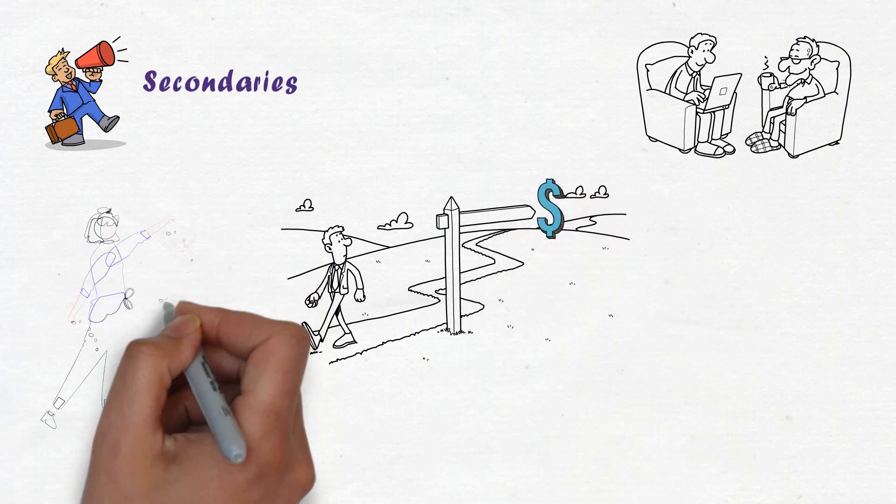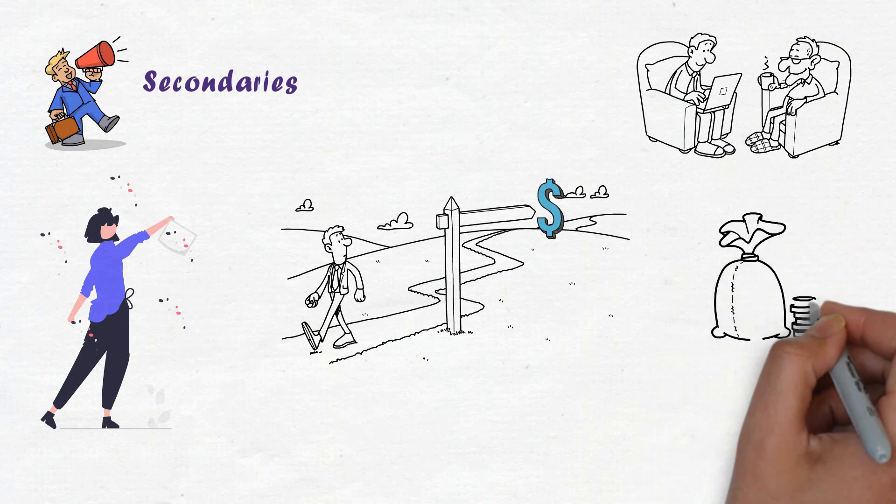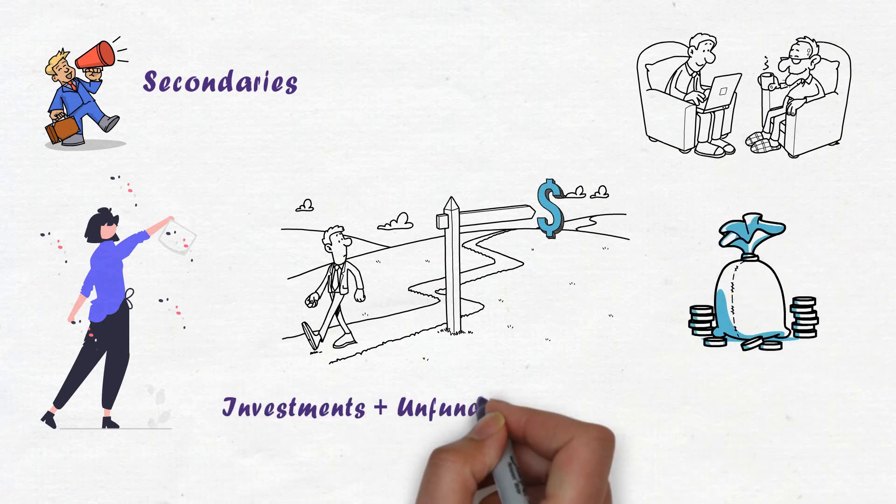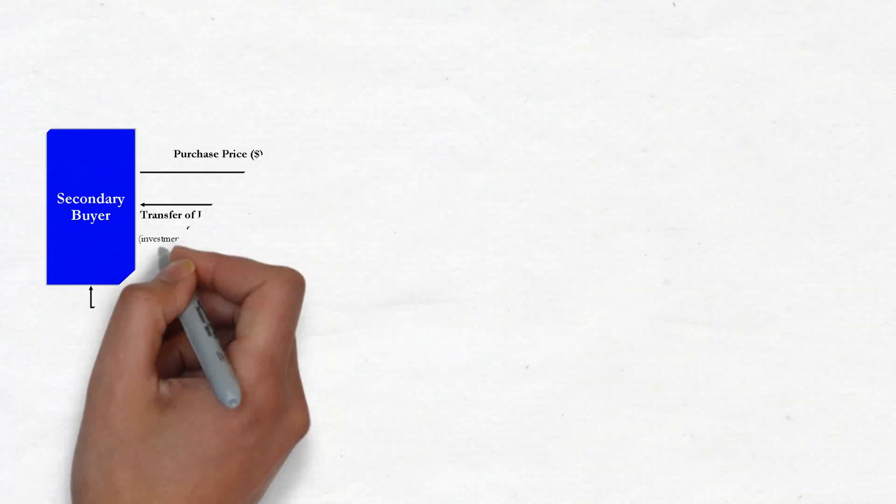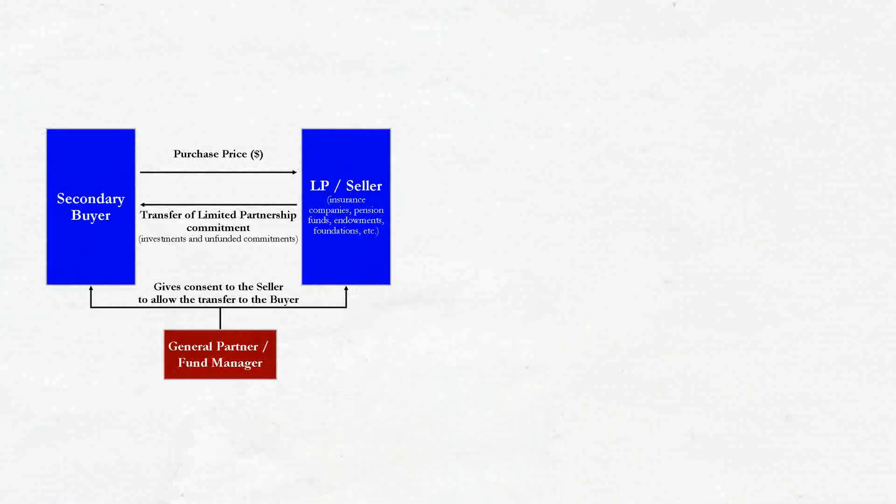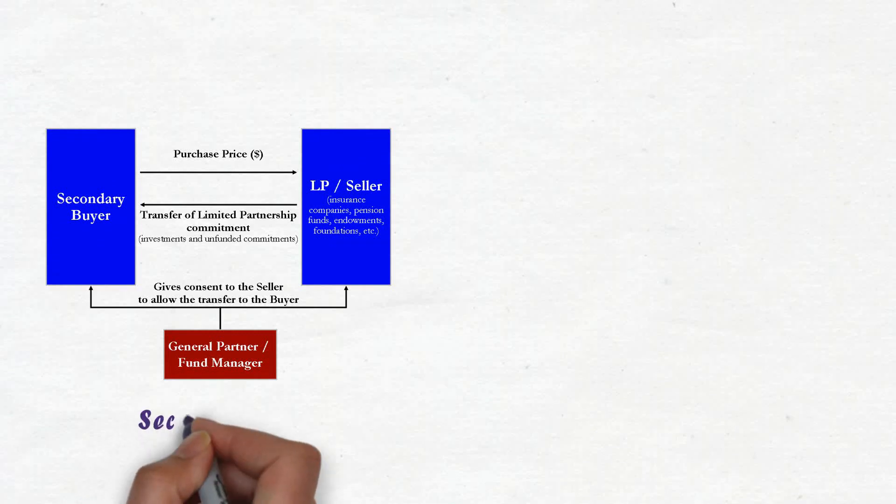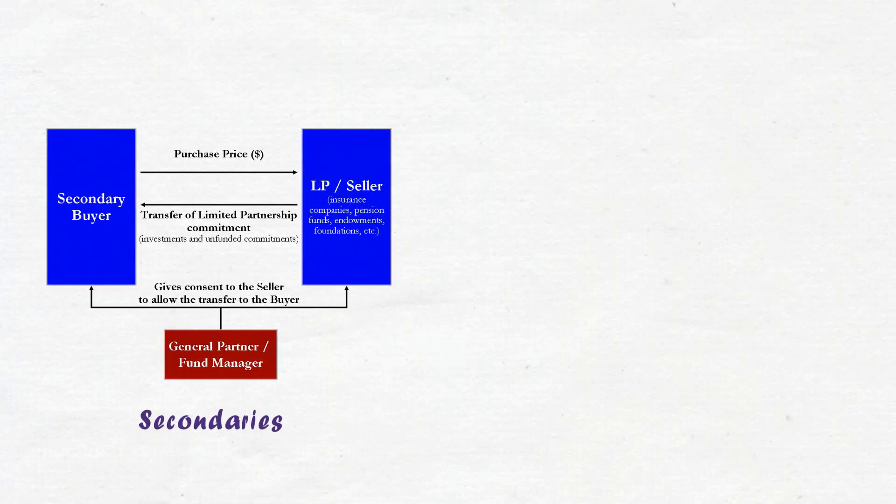The buyer exchanges a single cash payment to the seller for both the investments in the fund plus any unfunded commitments to the fund. Buying and selling pre-existing investor commitments to private equity and other alternative investment funds is the main objective of the secondaries.